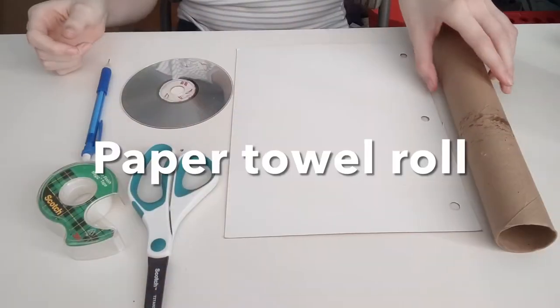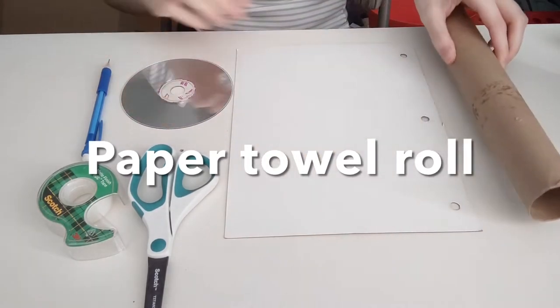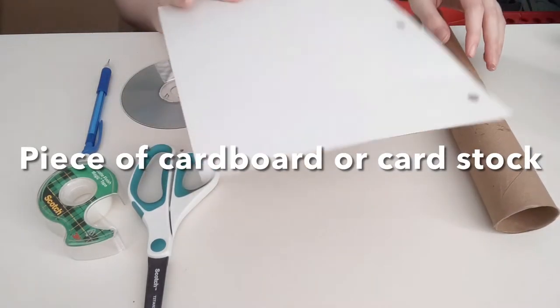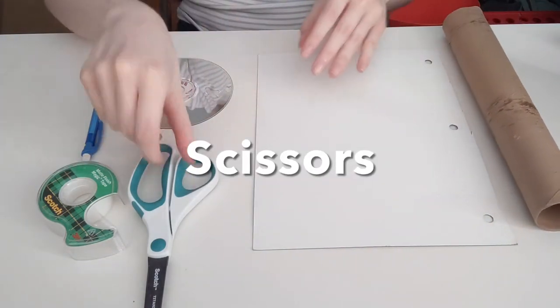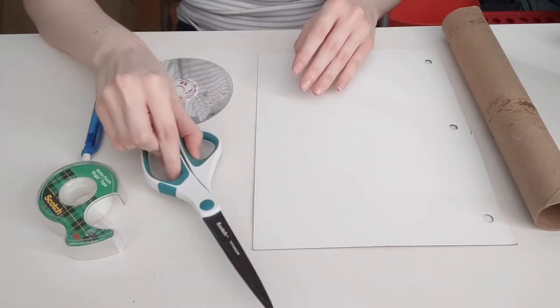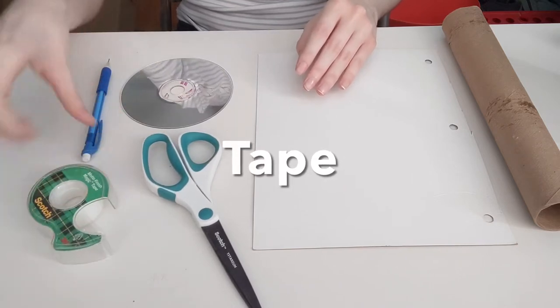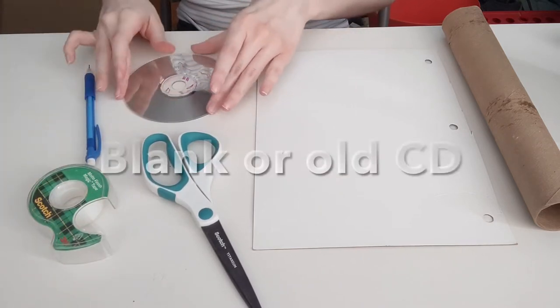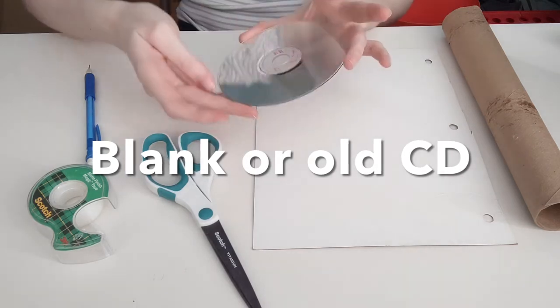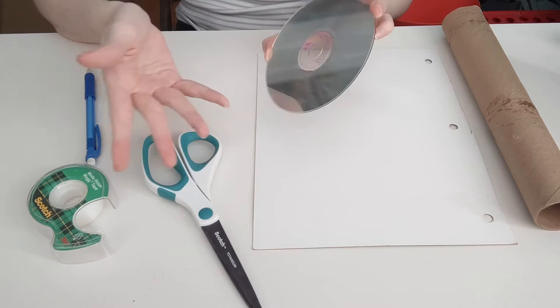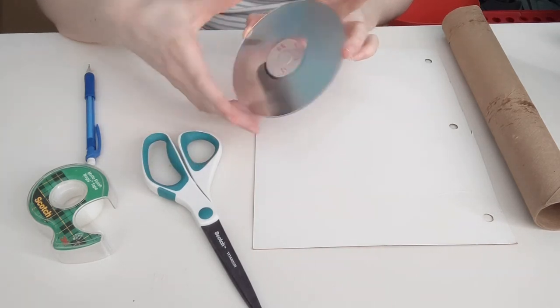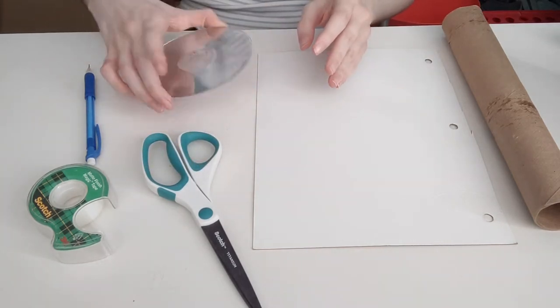So for today the materials we need to build a spectroscope are an empty paper towel roll, a piece of cardboard or cardstock, I just got one off the end of an old folder I don't need anymore, scissors or craft knife, tape, a pencil, and a blank CD or an old CD that you don't need anymore even if it's scratched up it should work. Just make sure that it doesn't have anything important on it so you're not getting rid of a CD with some important information on it.